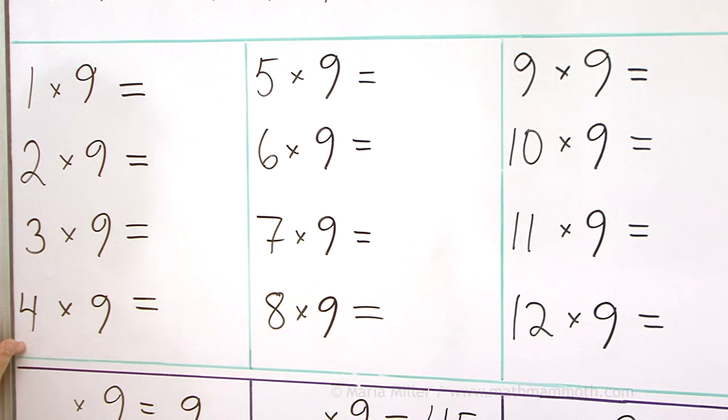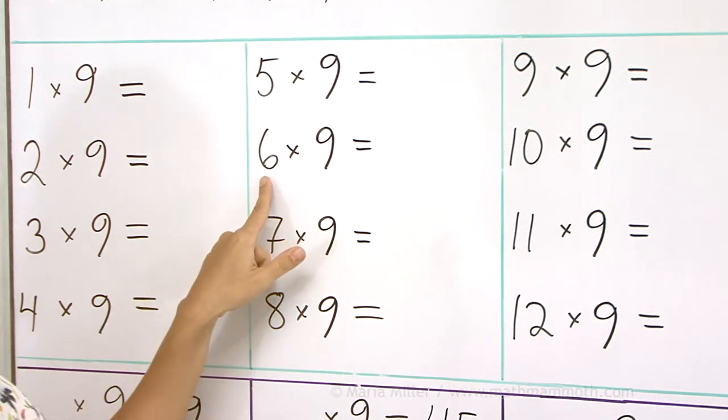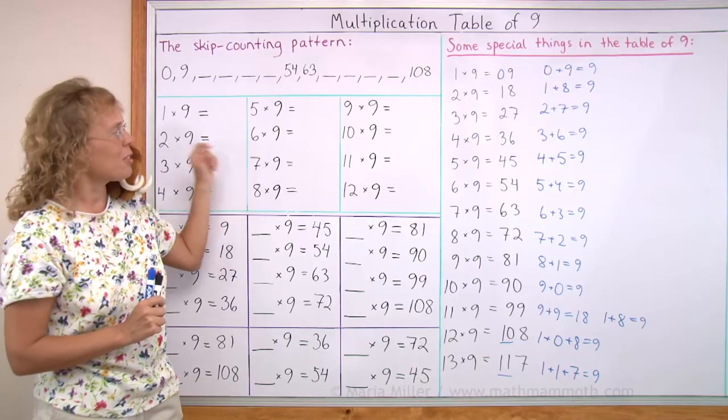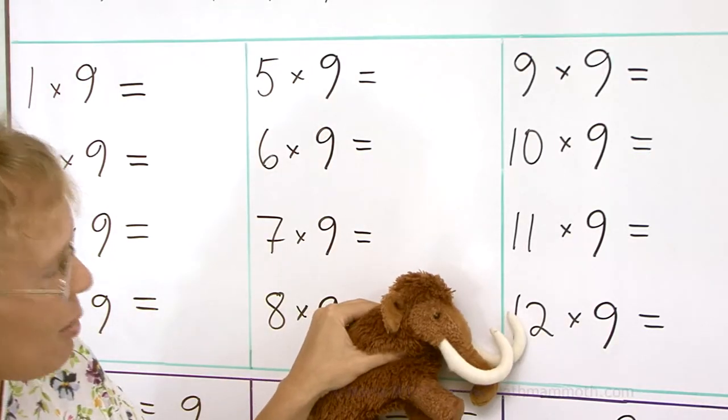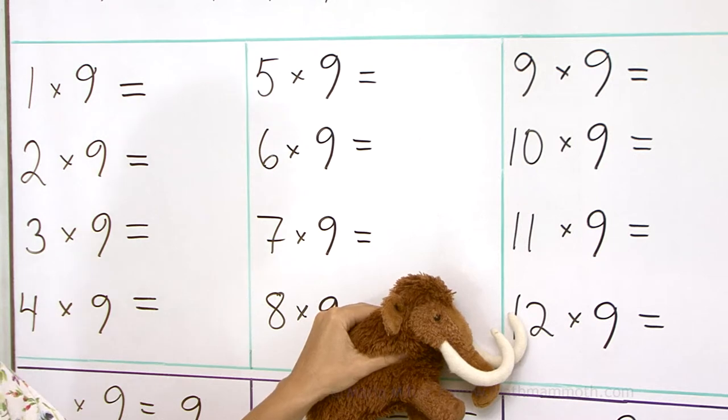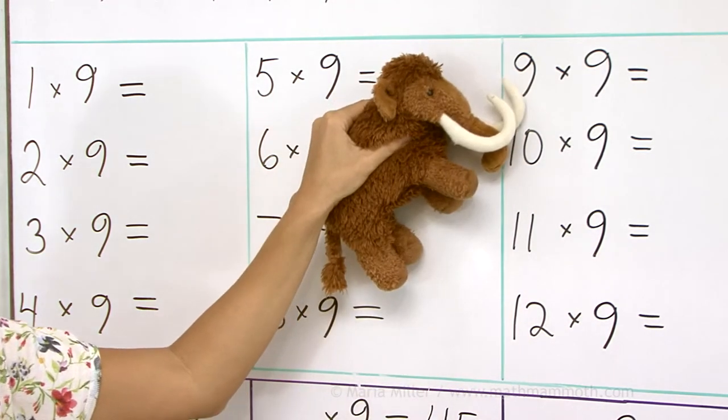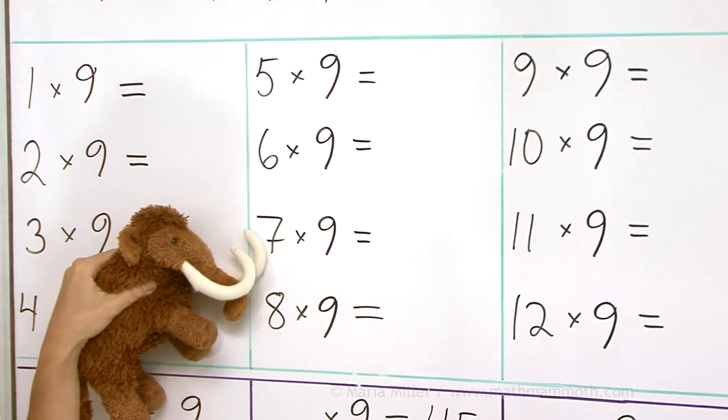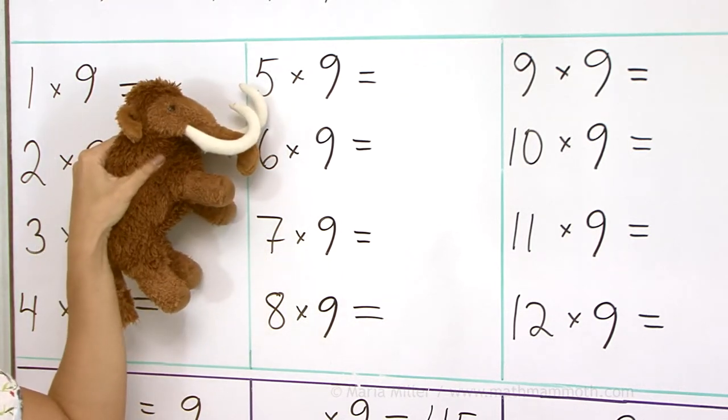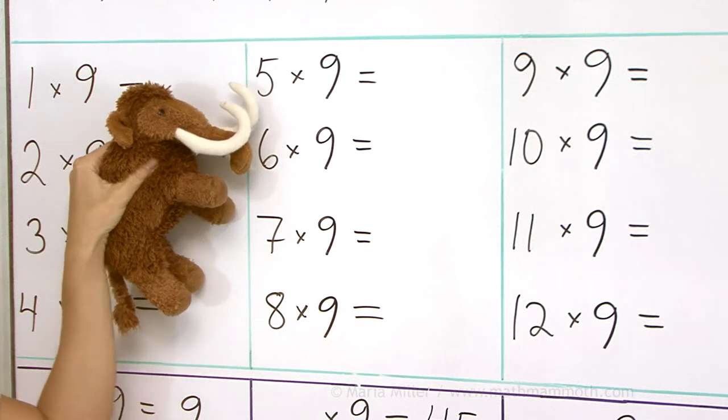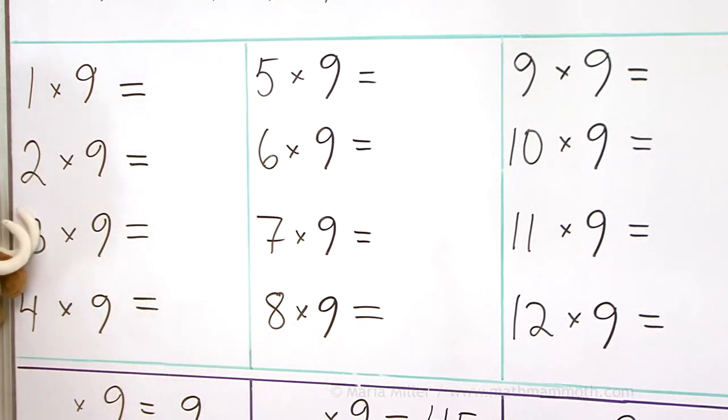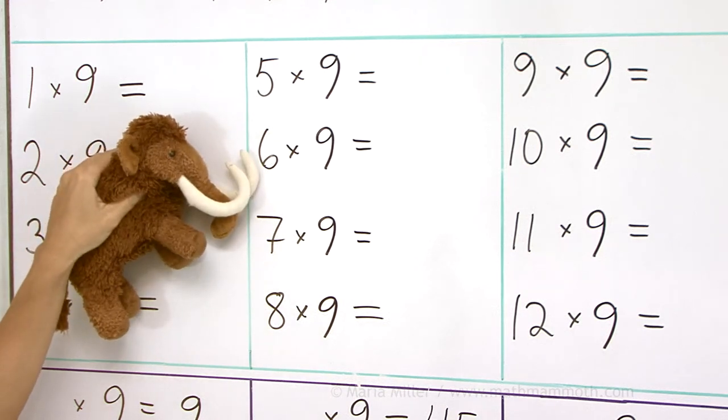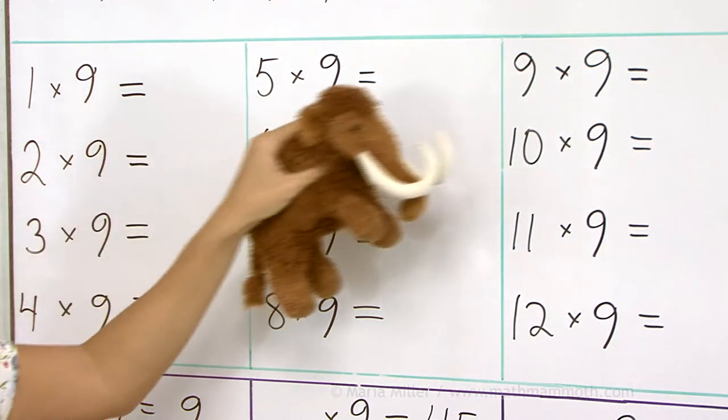7 times 9? 8 times 9? 4 times 9? 6 times 9? 54. Matthew, yote. 12 times 9. 9 times 9? 7 times 9? 5 times 9? 3 times 9? 6 times 9? 10 times 9.